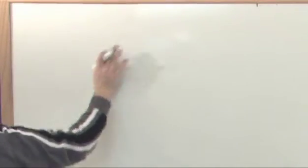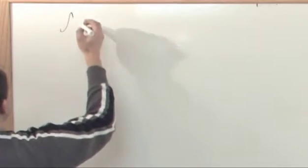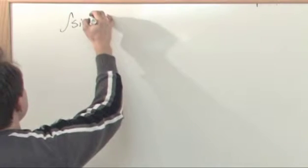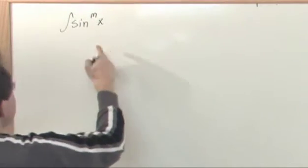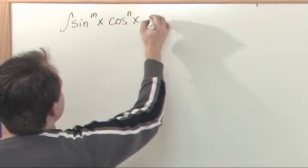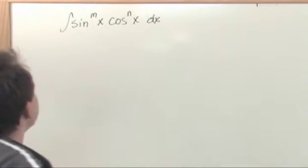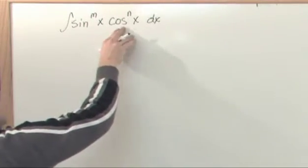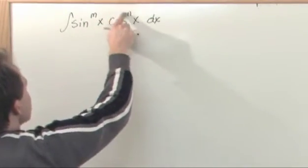The first form of the trigonometric integrals that you'll see are of the form of the integral of sine to the mth power of x times cosine to the nth power of x dx. So here is the general case. You have a sine function raised to a power, and you have the cosine function raised to a power, and these can be different numbers.